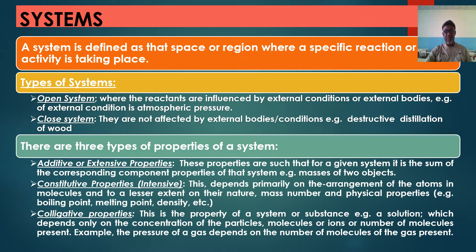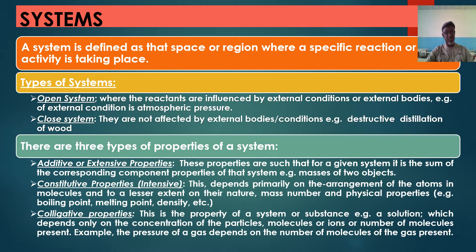There are three types of properties of a system. One is additive or extensive — properties that result in summation, just like mass; the masses of two objects make up the total mass. We have constitutive, also called intensive, which depends on the arrangement of the molecules of that system. But the one that is of interest to us is colligative properties, which is the property of a system that depends only on the concentration of the particles or molecules that make it up — for example, the pressure of a gas depends on the molecules of that gas.